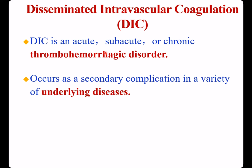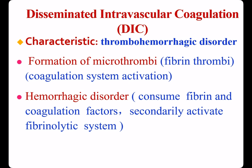Disseminated intravascular coagulation, or DIC, is an acute, subacute, or chronic thrombohemorrhagic disorder. It occurs as a secondary complication in a variety of underlying diseases involving tissue factor or thromboplastic substance release or widespread endothelial cell injury. The characteristic of DIC is thrombohemorrhagic disorder. First feature: due to coagulation system activation, microthrombi — also called fibrin thrombi — form throughout the microcirculation.